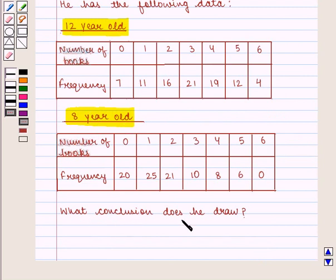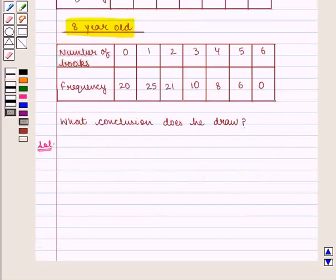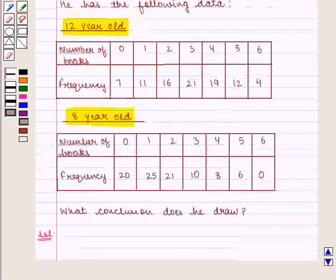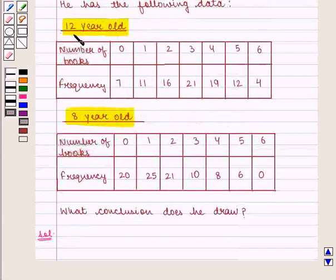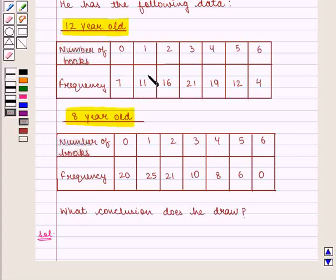What conclusion does he draw? In this question we are given 2 samples of size 90 of 8 year old and 12 year old children displaying their reading habits. For 12 year old children: 7 children have not read a book, 11 have read 1 book, 16 have read 2 books, 21 have read 3 books, 19 have read 4 books, 12 have read 5 books, and 4 have read 6 books in the last 4 months.